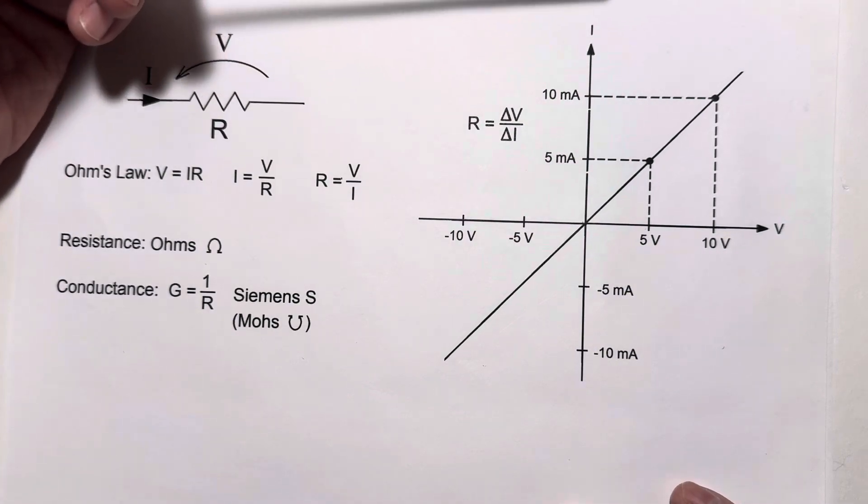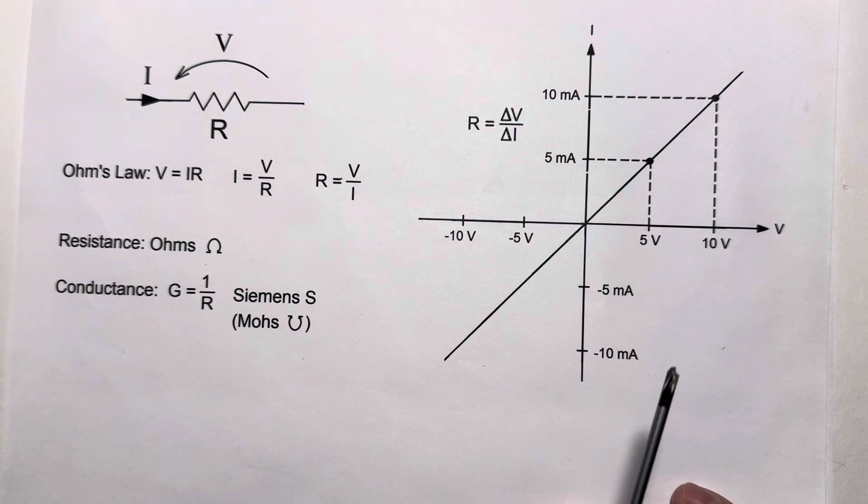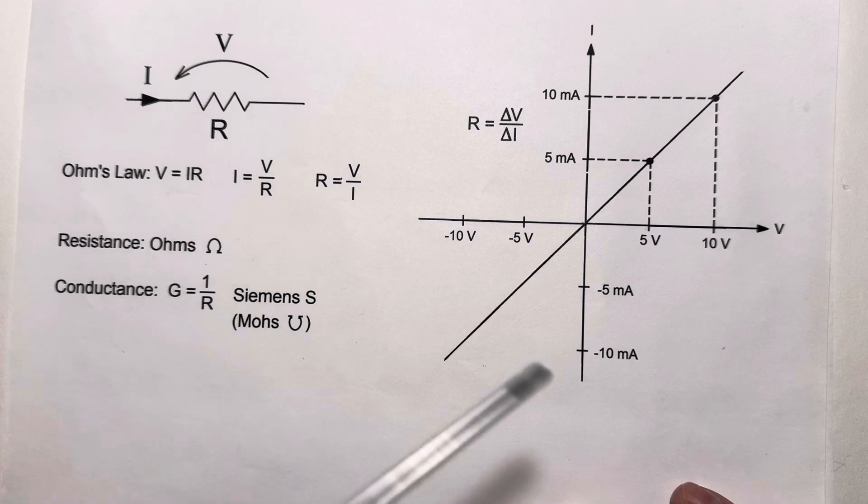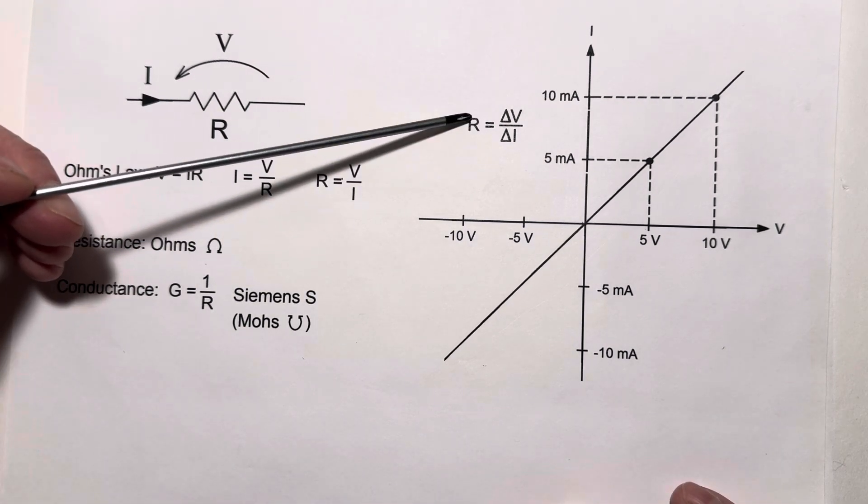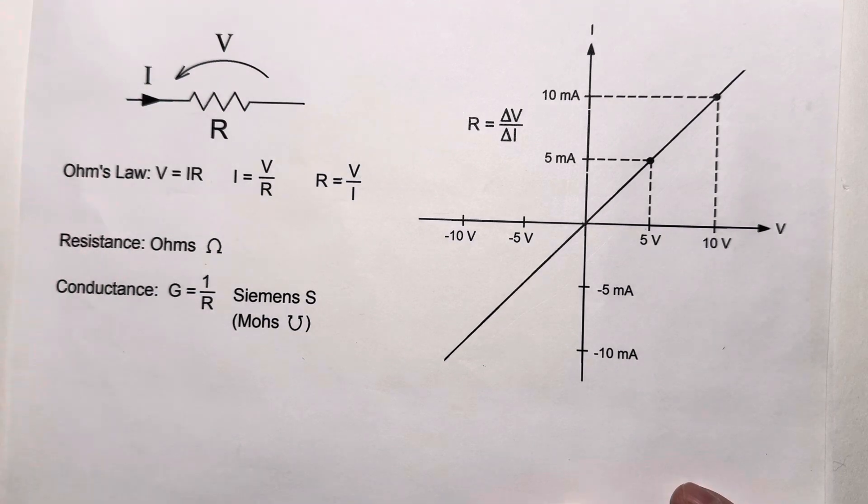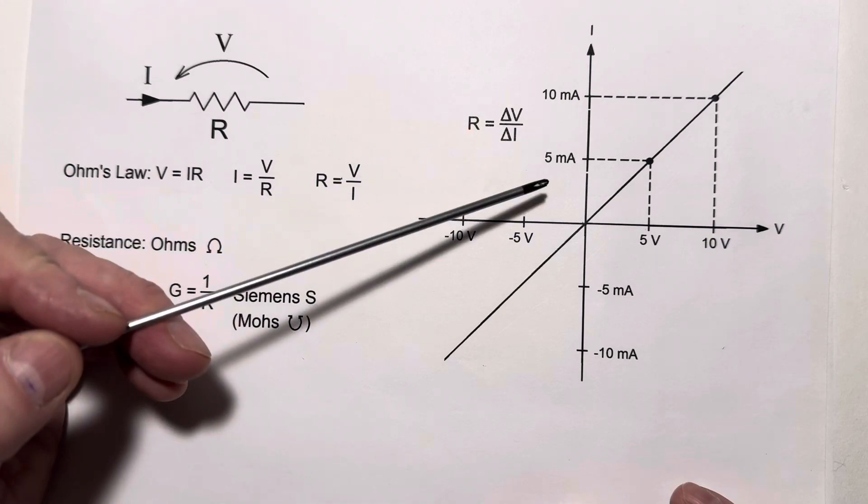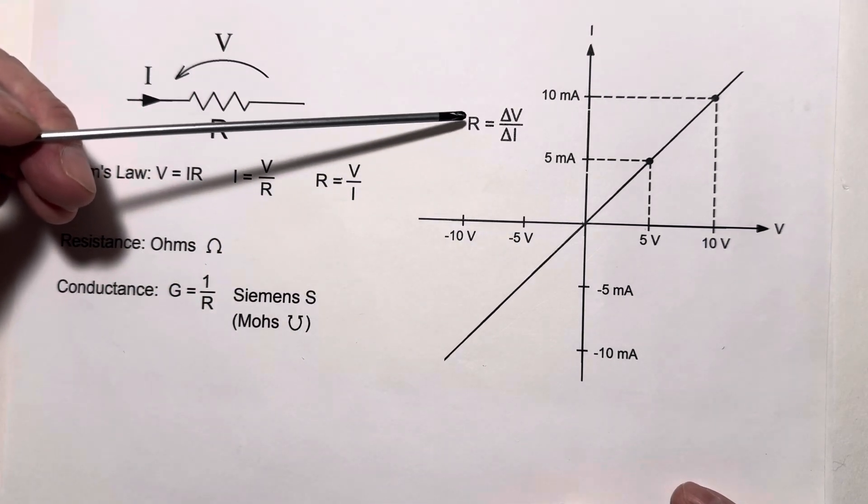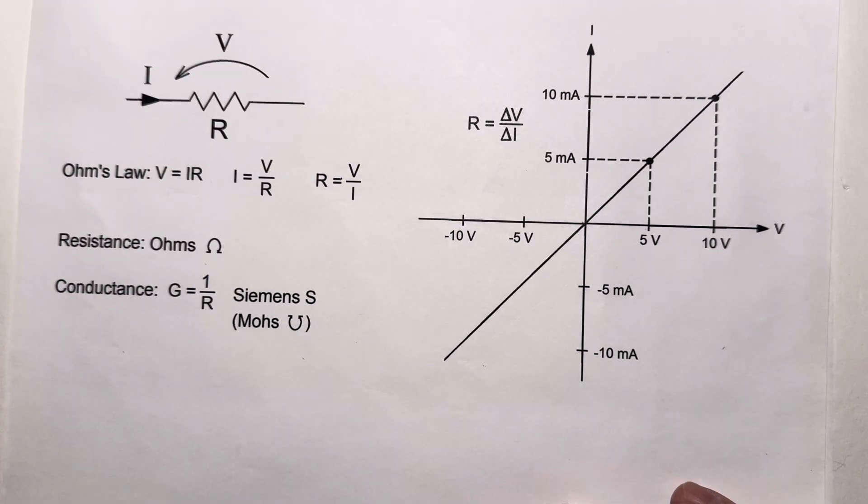And generally speaking, we can determine the resistance by measuring the change in voltage and finding the resulting change in current, delta V over delta I, and get the resistance. In this case, delta V is 5 volts, delta I is 5 milliamps. 5 volts divided by 5 milliamps is 1,000 ohms. So this is the line we get for a 1,000 ohm resistor.